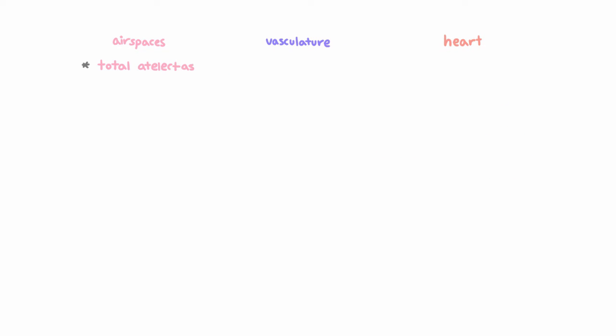Total atelectasis, which you can see with a pneumothorax, or complete alveolar filling, which you can see in a severe pneumonia, both cause shunting by complete elimination of alveolar ventilation in some area of the lung that's still receiving blood flow. Hypoxic pulmonary vasoconstriction is going to reduce perfusion to these lung regions, but blood flow is not completely eliminated, so some shunt occurs.